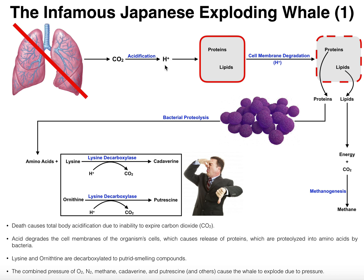Eventually that acid is going to accumulate and accumulate. Inside a cell we've got proteins and lipids — lipids also exist in the membrane of the cell. Over time, as the acid builds up inside the dead organism, that acid is going to erode away the plasma membrane of all of these cells. We're going to get degradation of those cell membranes, gaps in the membrane, and all the contents of the cell — lipids, proteins, and other things — are going to be expelled into the general area of the dead body.